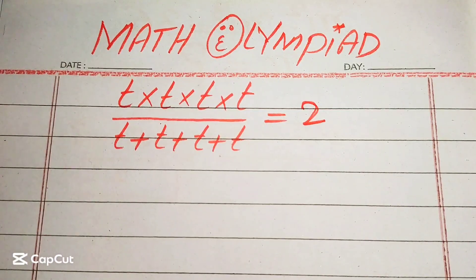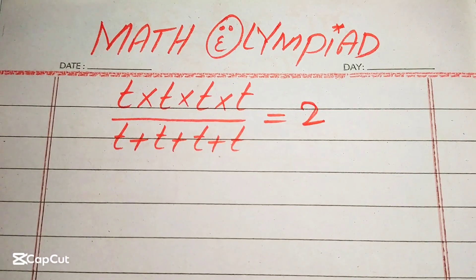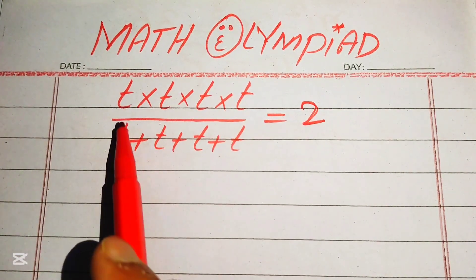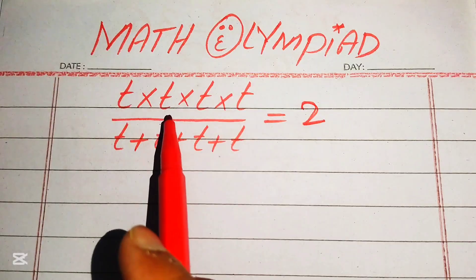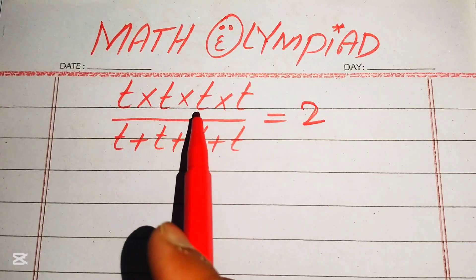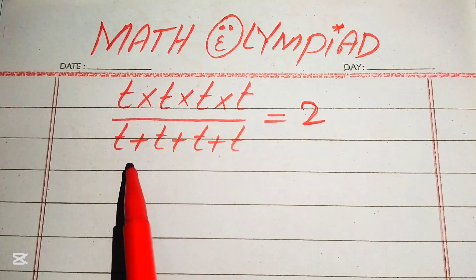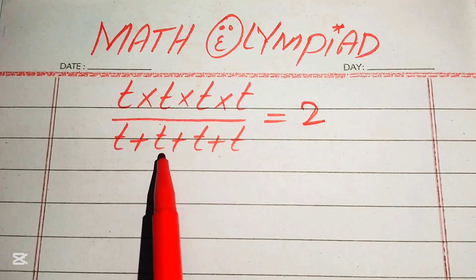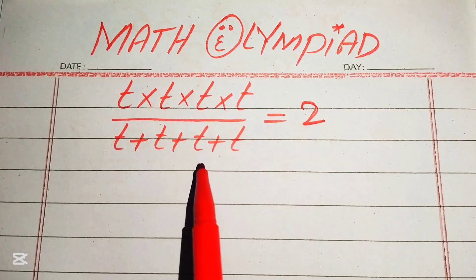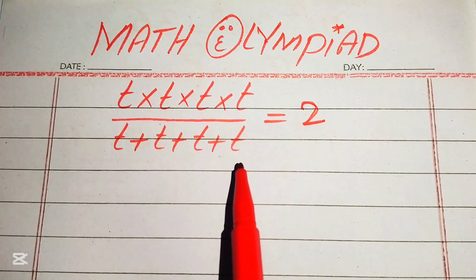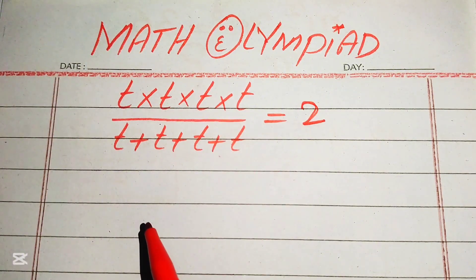Hello everyone, welcome to solve this nice math algebra problem. We have t multiplied by t multiplied by t multiplied by t, divided by t plus t plus t plus t, and it equals 2. We will solve this problem for the values of t only.